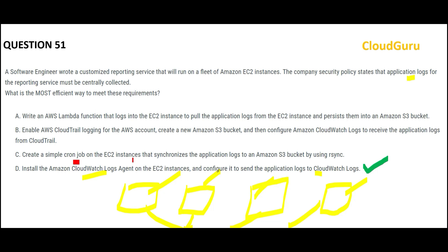Option C says you do a cron job on EC2 instances and synchronize the application logs to an S3 bucket. A cron job is a custom solution. The CloudWatch Log Agent is not a custom solution — it is born for its purpose. A cron job is like using a bodybuilder to act in films — it can work, but it's not what it was designed for.